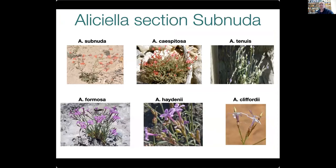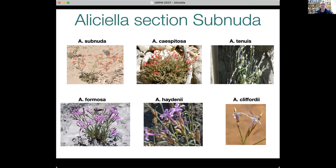This brings me to Aliceella, specifically subsection Subnuda. Aliceellas can be annual, perennial, or biennial; Gilias are all annual. The species I'm presenting today are the biennial and perennial species of subsection Subnuda, which include six species. All have larger, quite showy corollas that attract pollinators. The group includes a number of very narrow endemics, as well as Aliceella subnuda, which has a considerable geographic range. All are largely restricted to the Colorado Plateau region in the Four Corners area of the western United States.